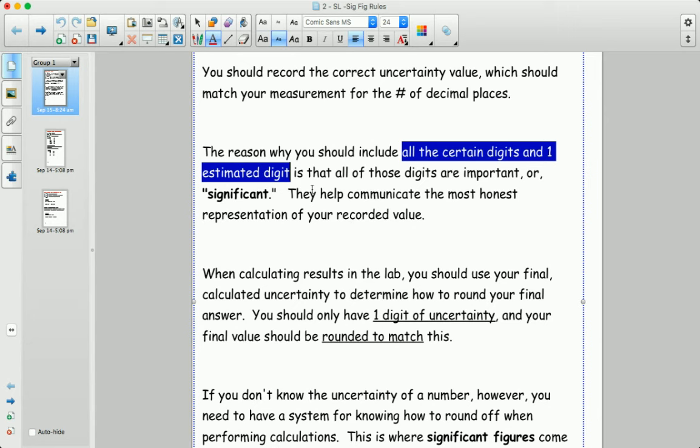All the certain digits obviously matter because we know about them with certainty and then we should take our best guess at the next one because that gives us a little bit more information. That first estimated digit is useful.